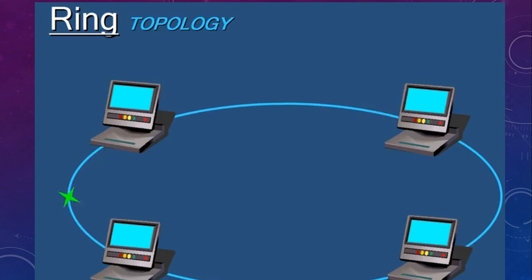Then there is ring topology, in which every machine is connected to at least two other machines. This gives us redundancy and there is no single point of failure. This topology is used depending on the requirement of the network.